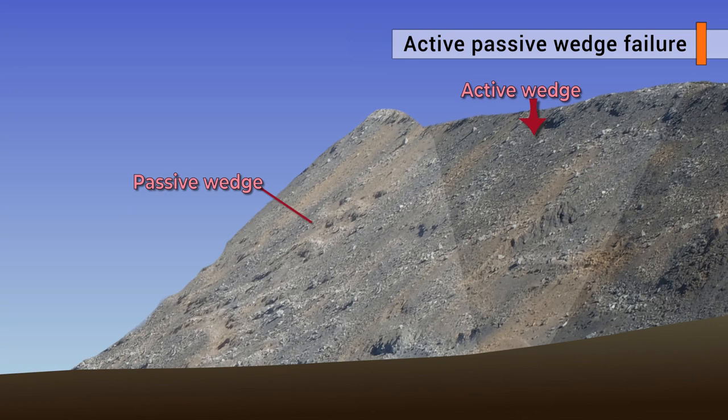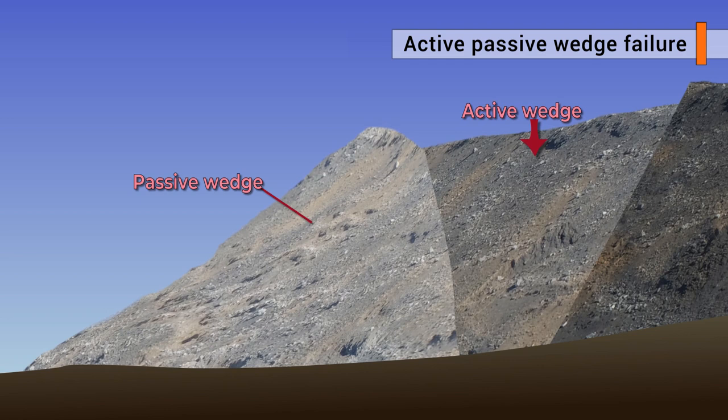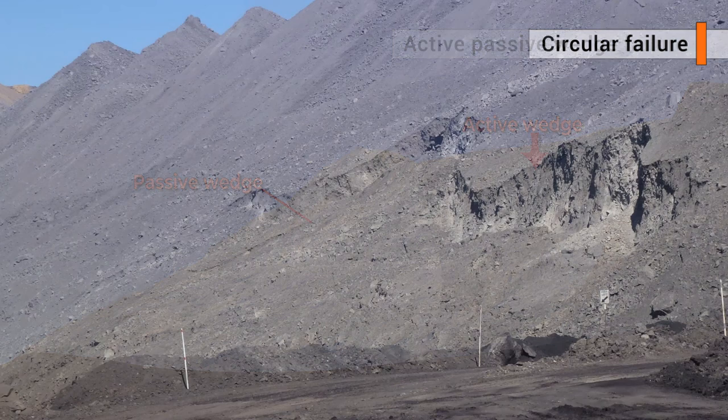Active-passive wedge failures. These type of failures occur in dumped slopes, particularly where the dump is formed on a weak and/or steeply dipping floor.